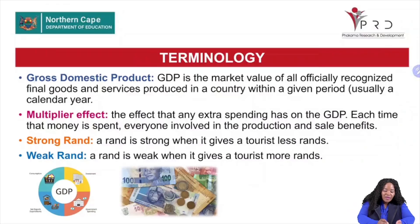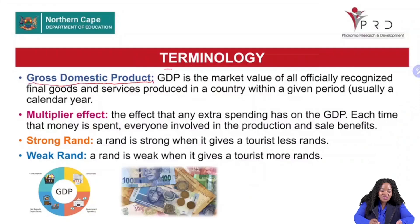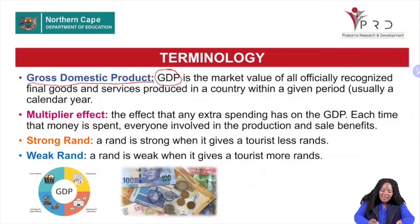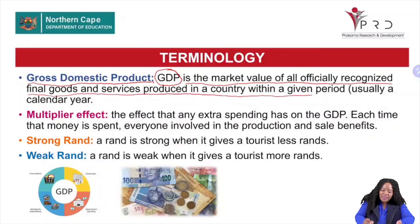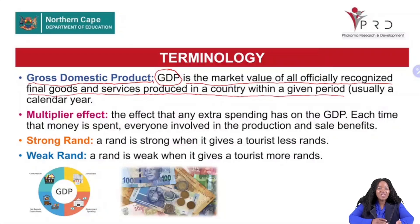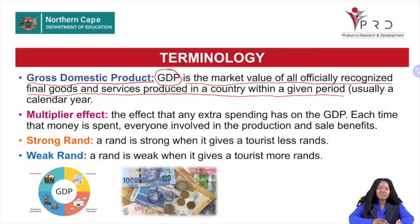Let's look at gross domestic product. What is gross domestic product? It is commonly known as GDP. It is the market value of all officially recognized final goods and services produced in a country within a given period, usually a calendar year. So it involves every good and service officially recognized that is produced in South Africa within a period of one year.